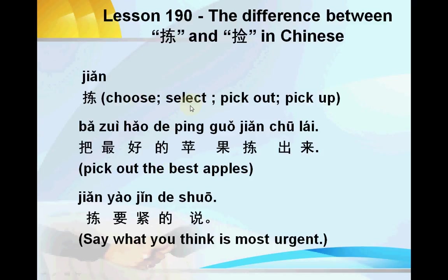Another example: 捡要捡地说 (jiǎn yào jiǎn de shuō). '捡' means pick or select, '要捡' means urgent or important, '说' means say or speak. So this means: say something you think is very important — not say everything, just pick or select the very important or very urgent things to say.